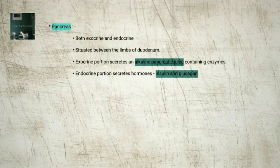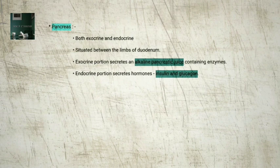3. Pancreas — the pancreas is a compound organ that is both exocrine and endocrine, situated between the limbs of the duodenum. The exocrine portion secretes an alkaline pancreatic juice containing enzymes, and the endocrine portion secretes hormones insulin and glucagon.